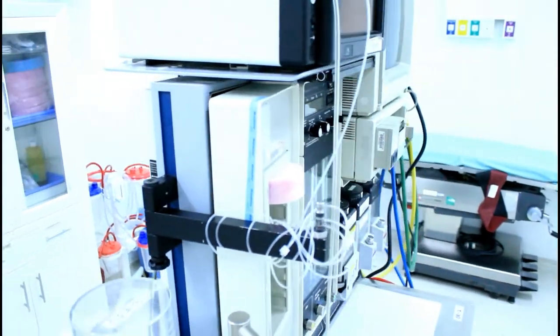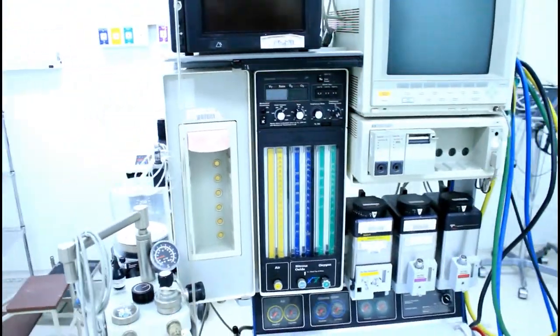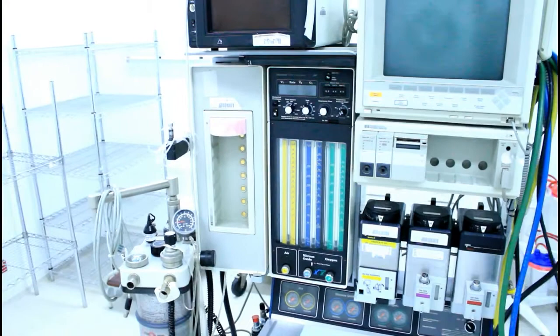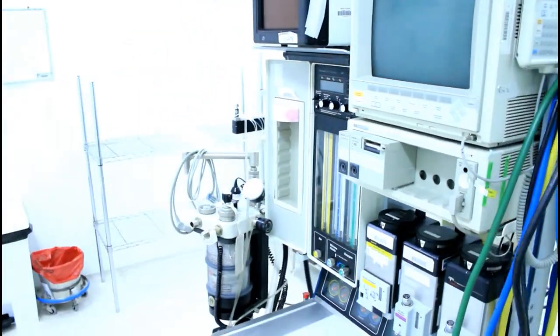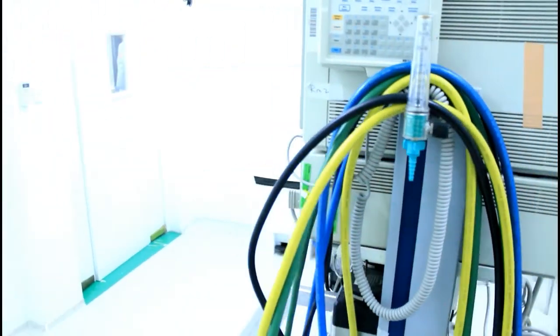In this video, we discuss the gas and vapor mixing and delivery mechanisms of an anesthesia machine. We will focus on gas supplies, flow meters, vaporizers, and the anesthesia circuit. We will also review common problems with these aspects of the machine.